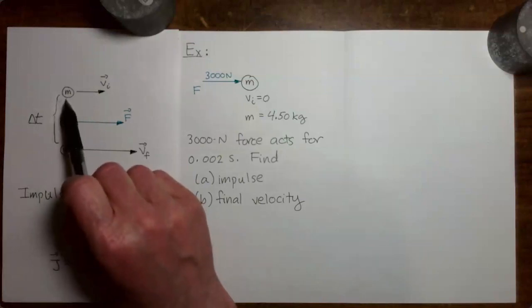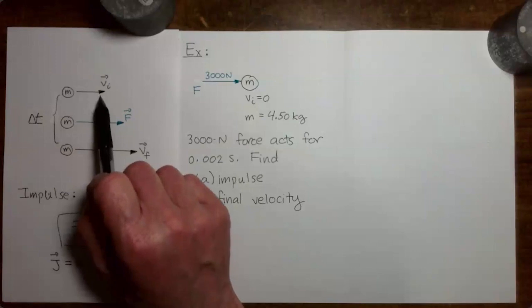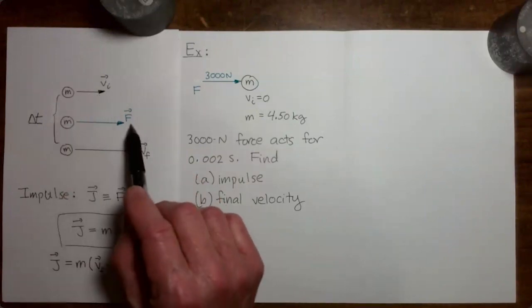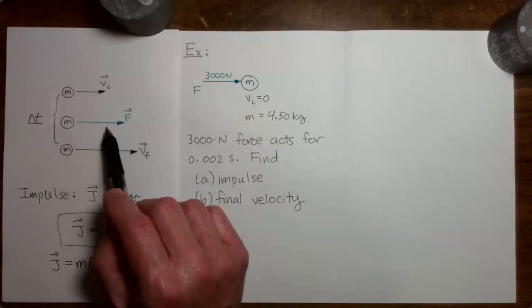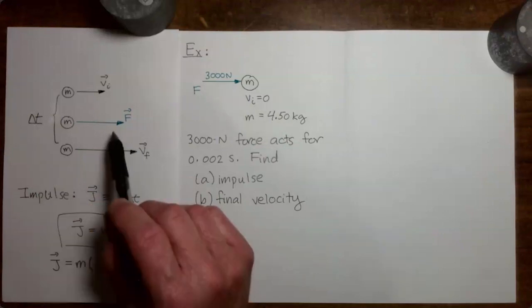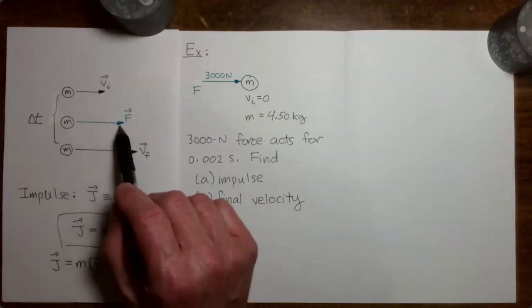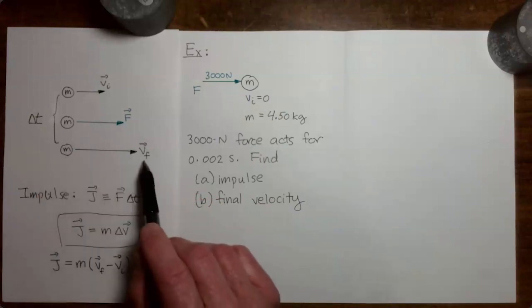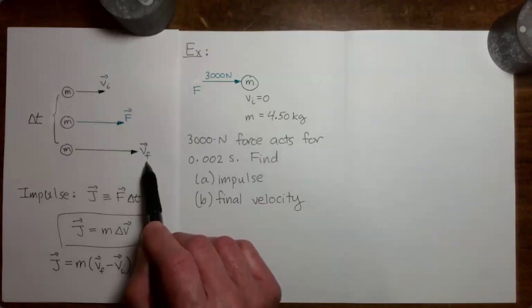Let's say that we have a mass which is moving along with the velocity v initial. Then a force f begins to act on the mass, and the force continues acting on the mass for a time delta t. After the force has acted on the mass for a time delta t, the mass will then have a new velocity. Let's call that new velocity v final.